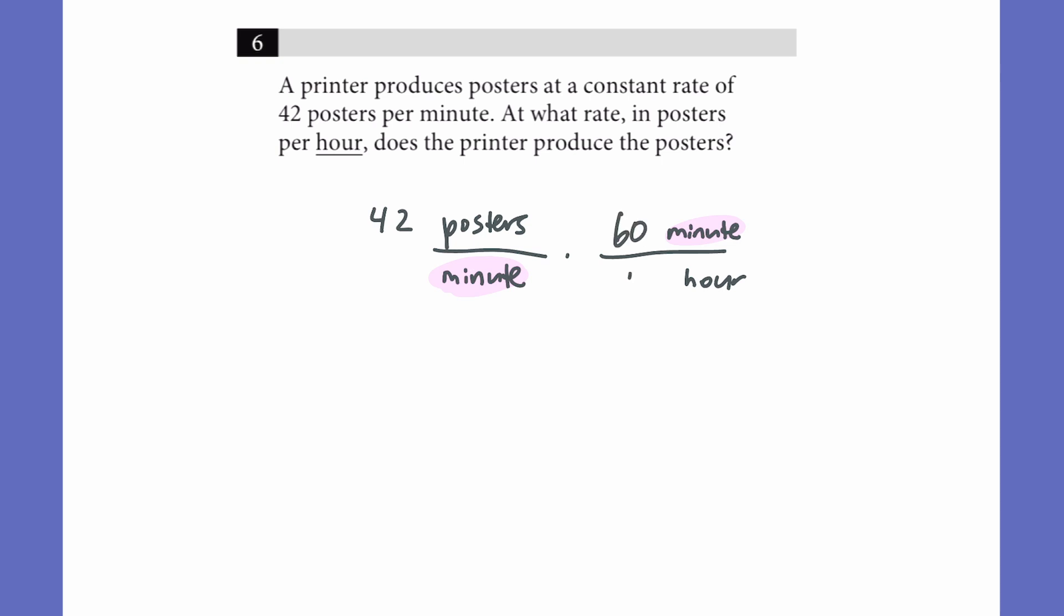So if we want to convert to posters per hour, we'll put minutes in the numerator so it cancels out, and we're left with posters per hour. Conversion for minutes to hour is there's 60 minutes in one hour. And doing this, we'll get 42 times 60 posters per hour, or 2,520. And if you need to do a quick double check, think about 42 posters getting printed per minute. There's going to be a lot more per hour, because an hour is a lot longer than a minute. So it makes sense that this number is so big. Doing that double check every time after a problem can really help you out and prevent you from making careless mistakes.